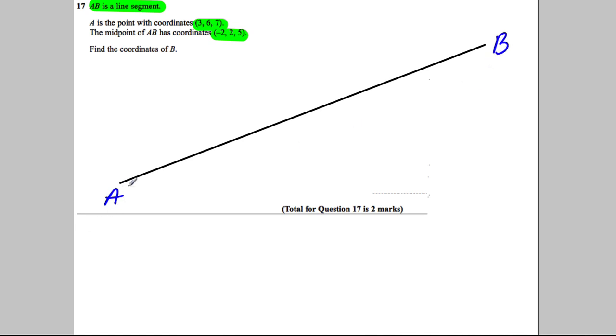Right, now you know A has the coordinates (3, 6, 7). Now you are asked for the coordinates of B, so you don't know these - they're question mark, question mark, question mark. You don't know them, but you know the midpoint of AB has these coordinates. So exactly in the middle you know it has coordinates (-2, 2,